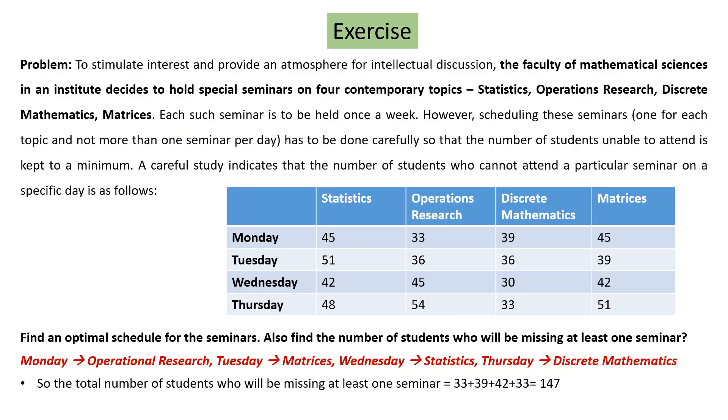This is all about the Hungarian method. There is an exercise provided — try to solve it yourself and check against the provided answer. Thank you for listening. In the next lesson we will look at an improved zero suffix method for finding the optimum solution of an assignment problem. Till then, have a good time. Bye.